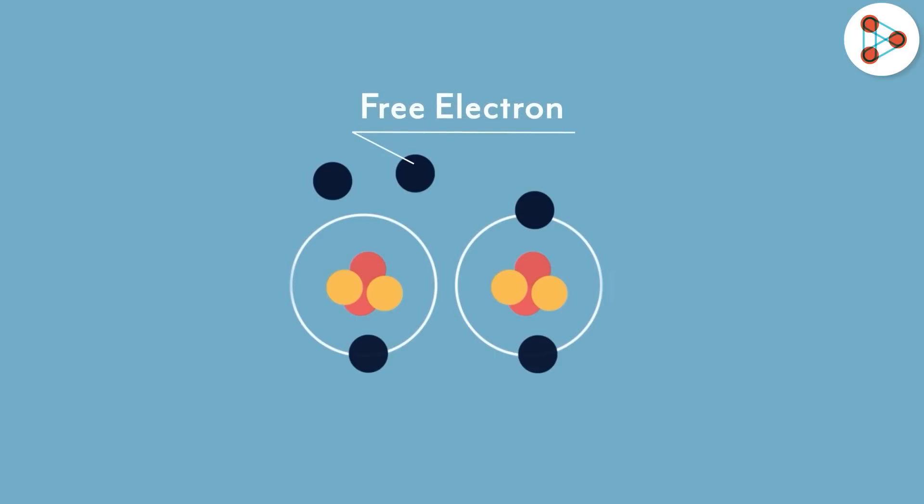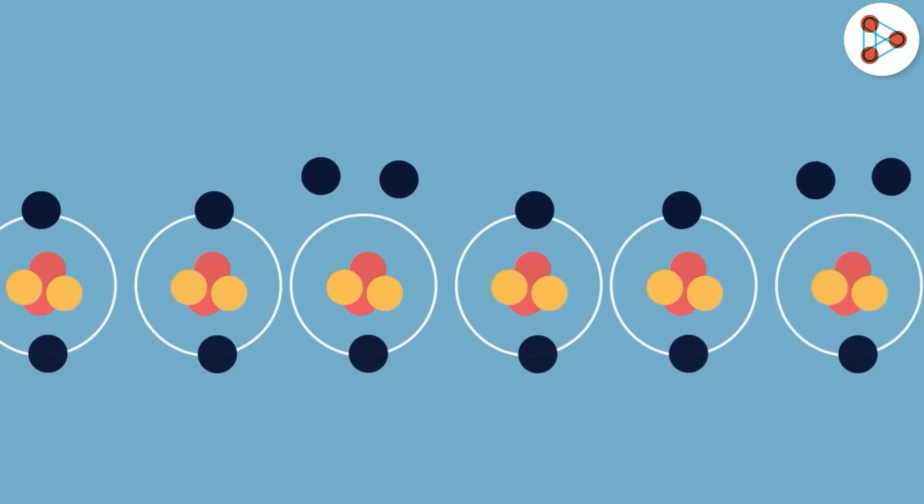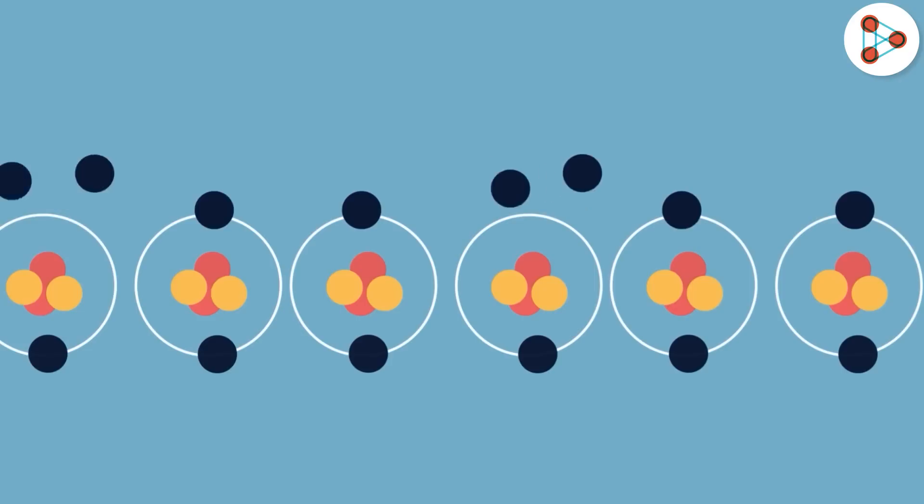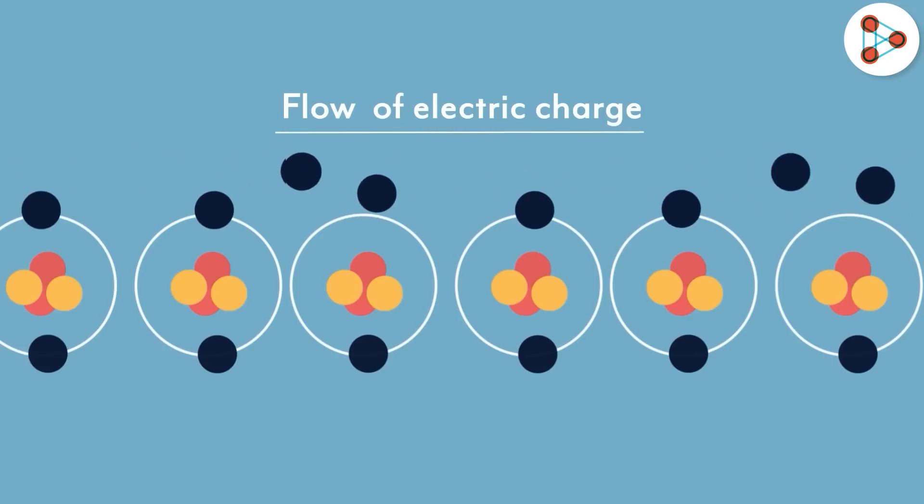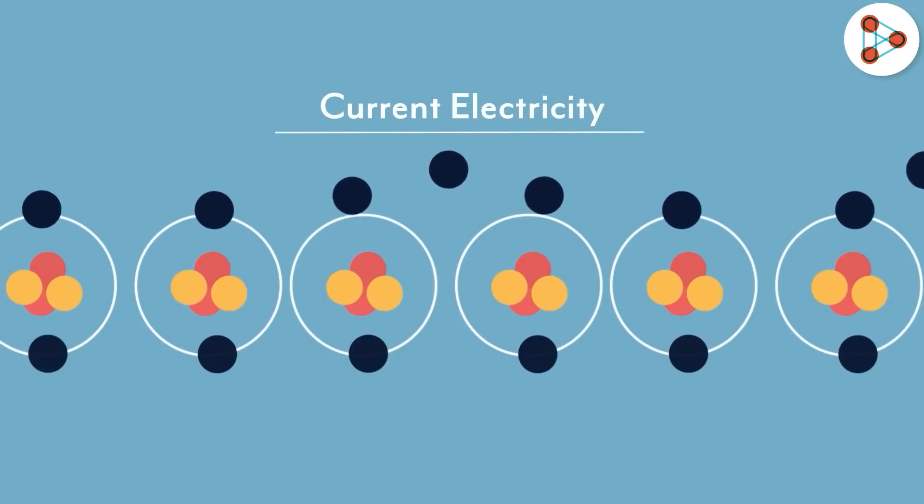Now this free electron may get pulled to the orbit of a new atom. And then the electron of the new atom gets repelled by the charge of this new electron and ejects the orbit to move to a new atom. And this process continues to form a continuous flow of electric charge. This is nothing but electric current or current electricity. It's simply the constant flow of electric charge.